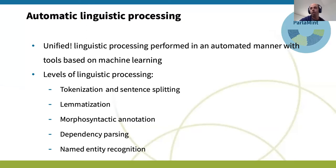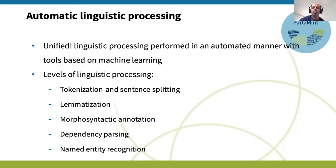The levels of linguistic processing that we did for all four corpora are tokenization and sentence splitting, lemmatization, morphosyntactic annotation, dependency parsing, and named entity recognition. As I said, these were all done in a uniform way, meaning they could be compared across corpora, which is an important angle of the research.